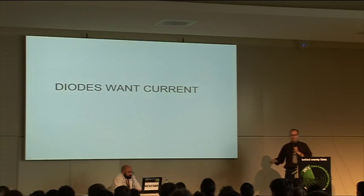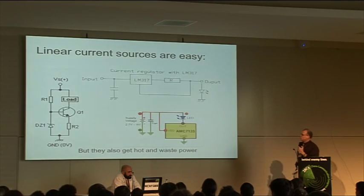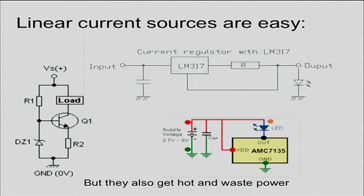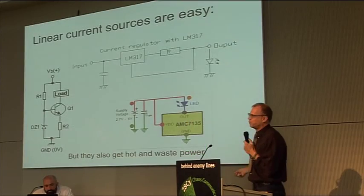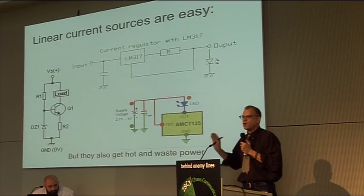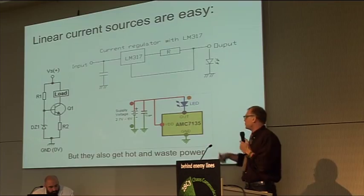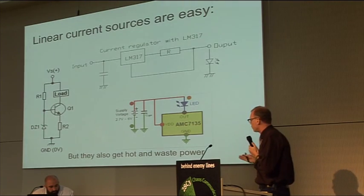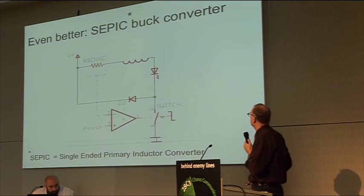Okay, so diodes want current, and next slide, I'll show you a couple ways to get them. Okay, you can do a linear current source using a couple of these different things. These work great. However, these are basically smart resistors. They also get hot. You can use a voltage regulator, put a big honking heat sink. It'll work great, but you might, once again, be wasting power. Okay, so how do we do this right?